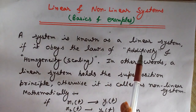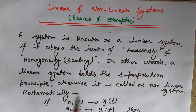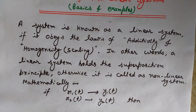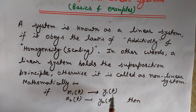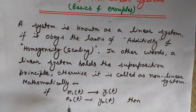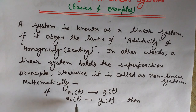We will understand what we mean by additivity and homogeneity in this lecture. If it is not following the principle of superposition, then we will call it a nonlinear system. So mathematically, if y1(t) is the output when we apply input x1(t), then y1(t) is the output of the system. Similarly, y2(t) is obtained when x2(t) is applied as the input to the system.